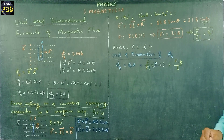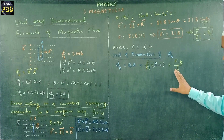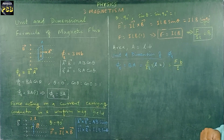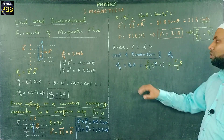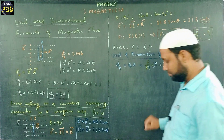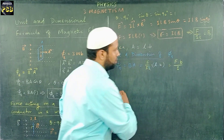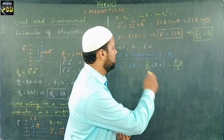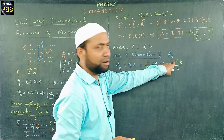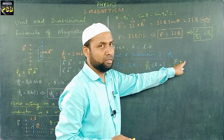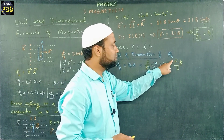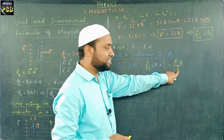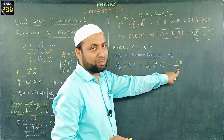This is the alternate expression for Φ_B. Here F is force and B is breadth. Force is measured in Newton, breadth is measured in meter, and I stands for current which is measured in Ampere.